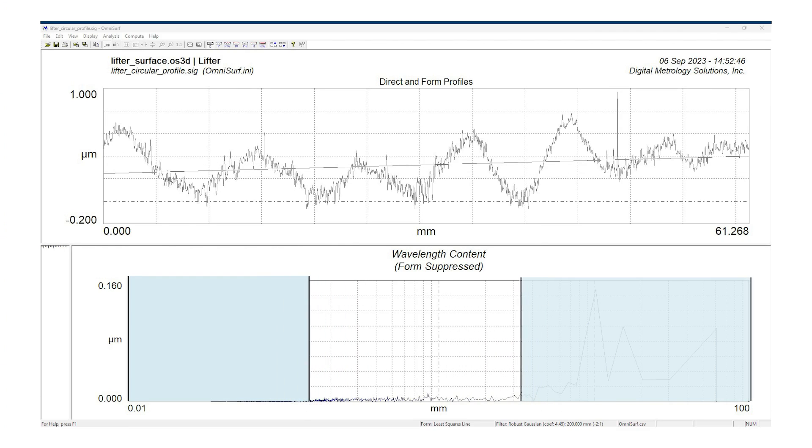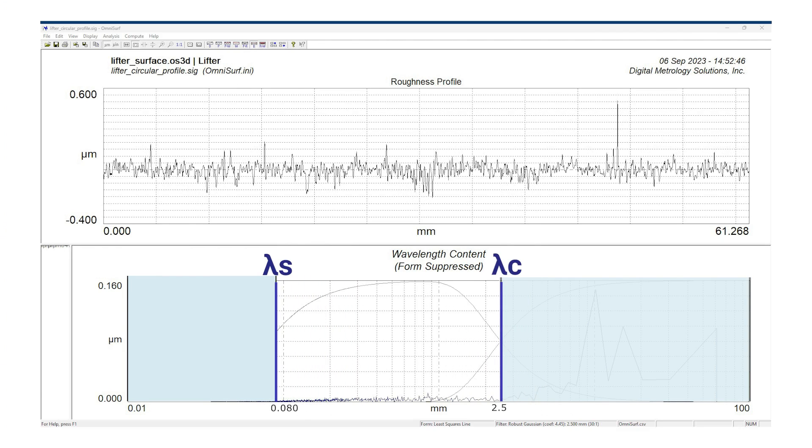then filter out the short and long spatial wavelengths to define the wavelengths we call roughness in our application. Once we have the roughness profile, we can calculate roughness parameters.